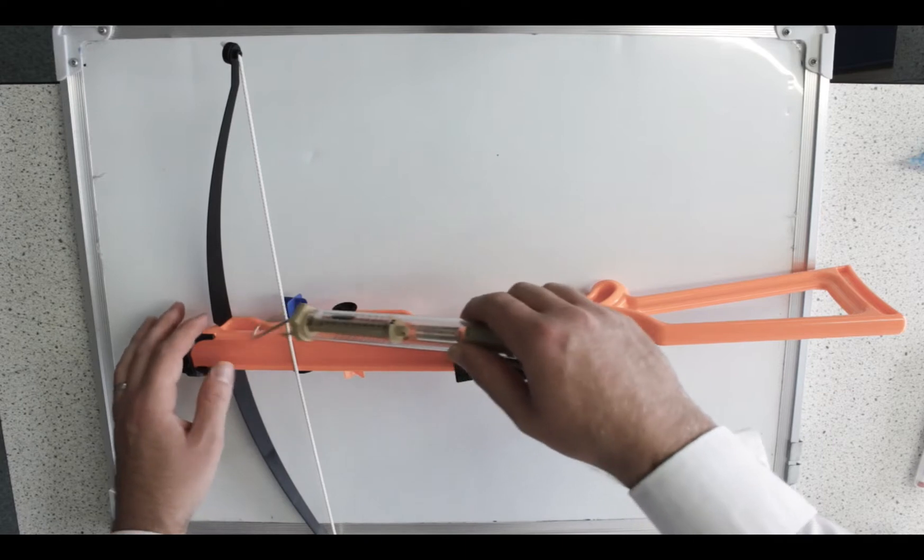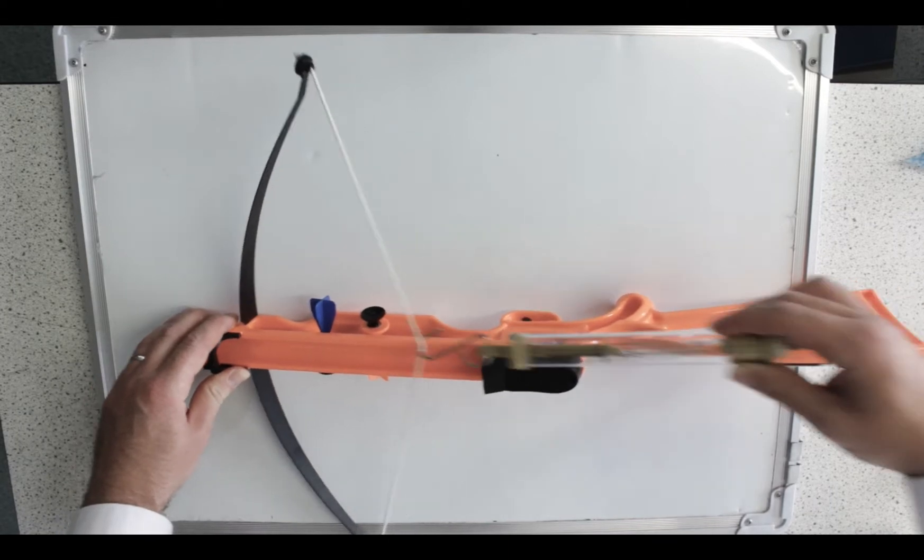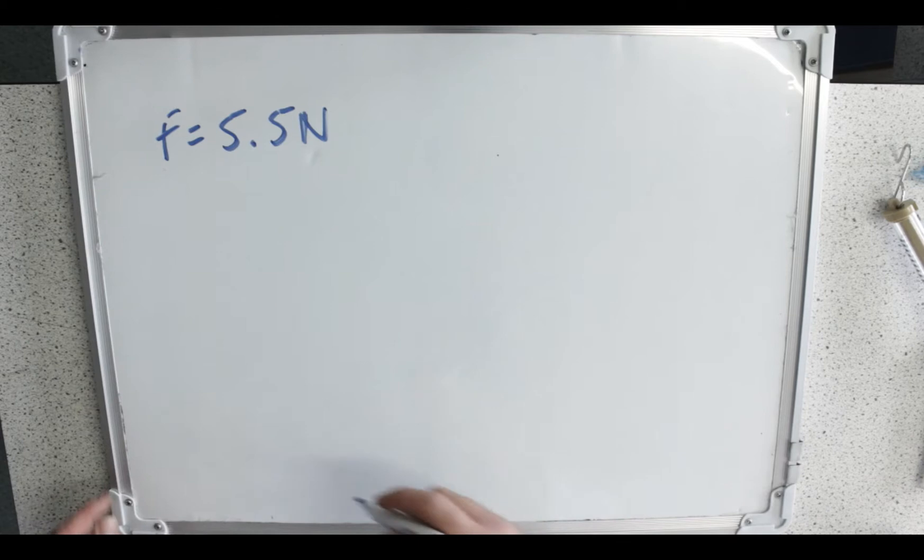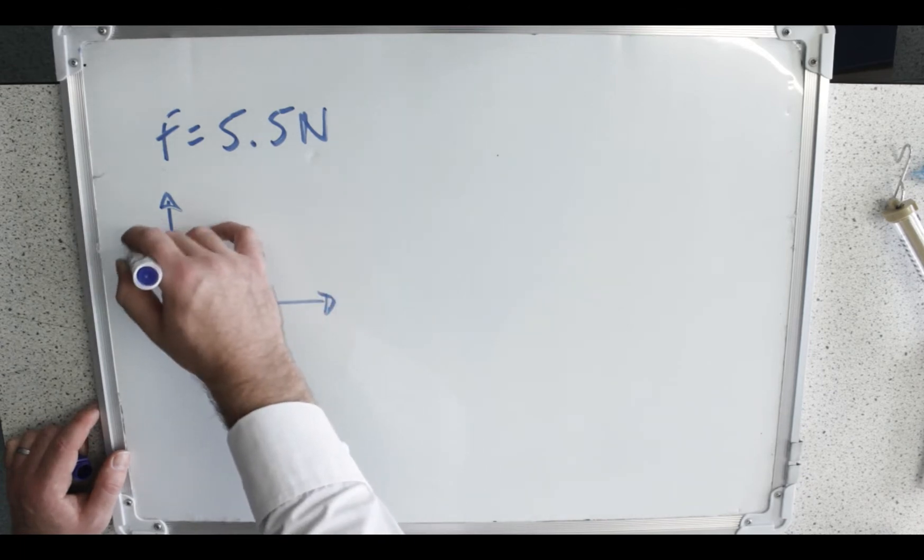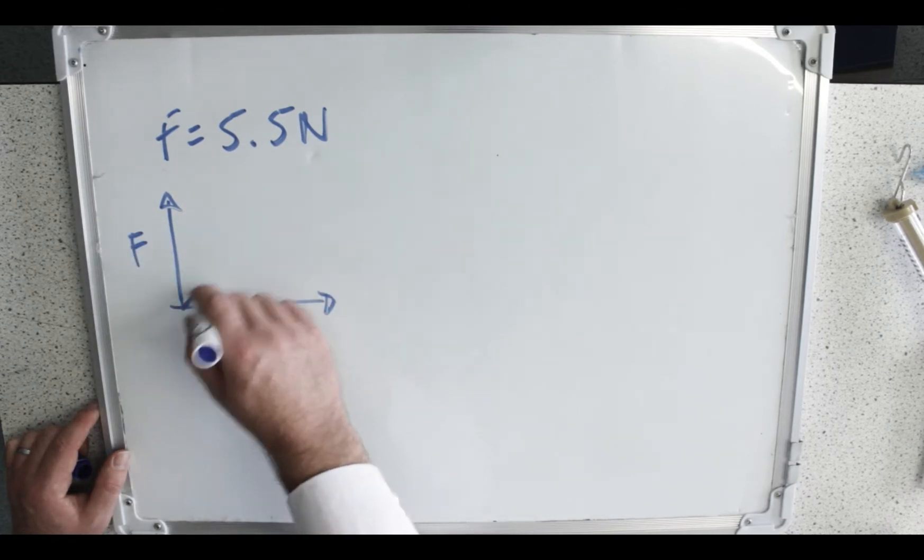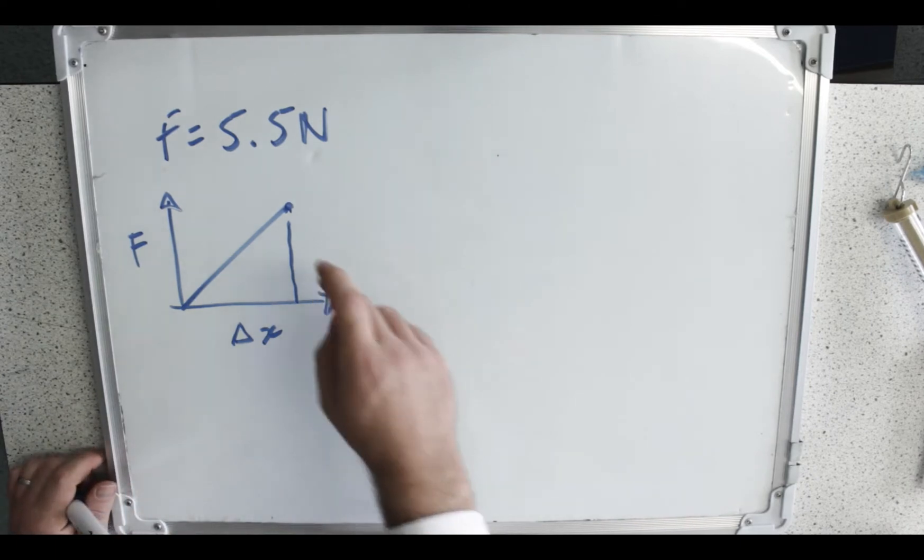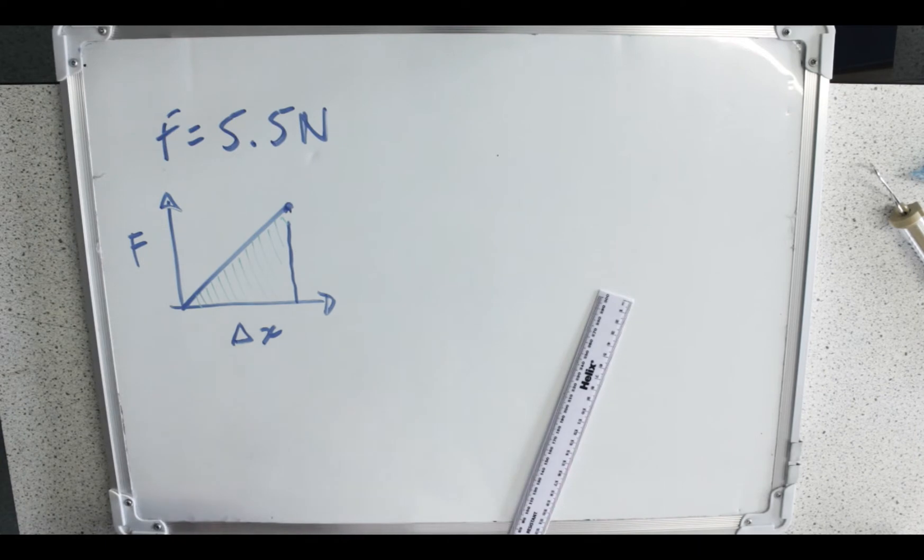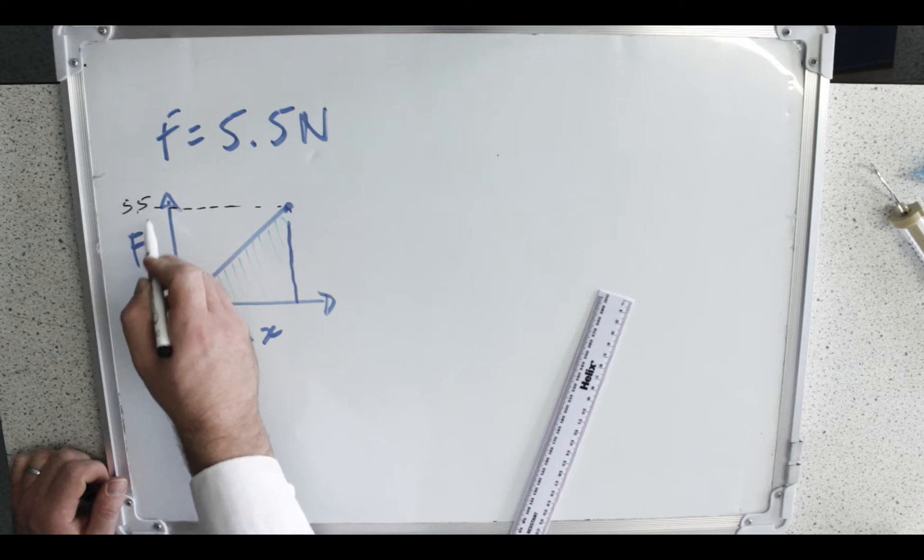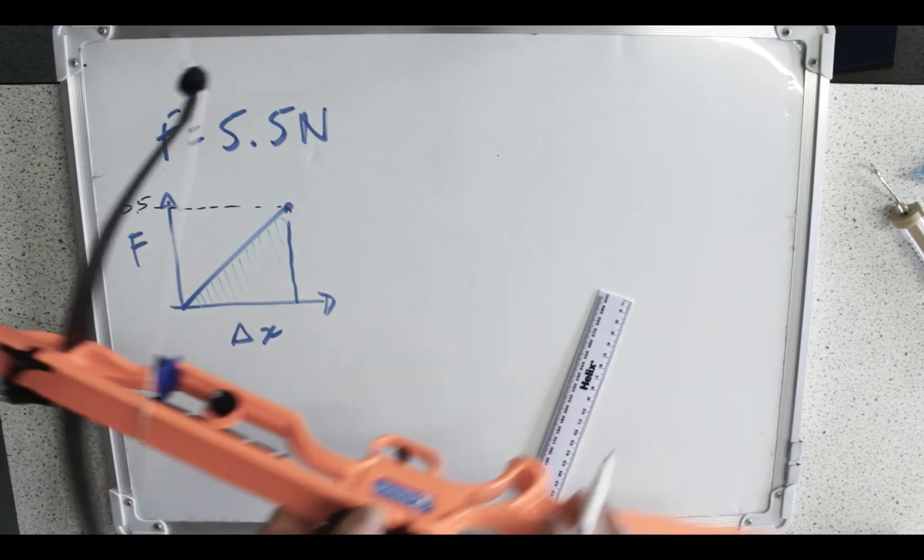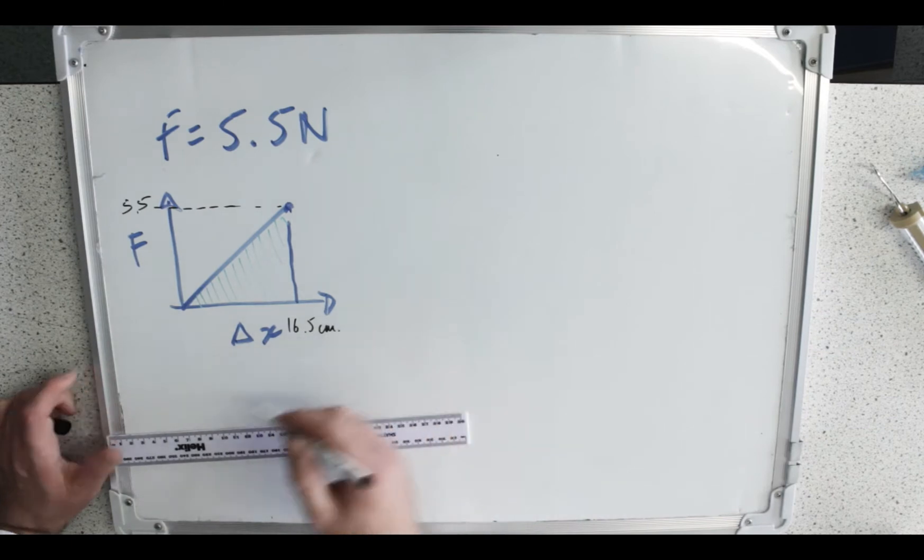I need to measure the force when it is fully extended, which is coming out at 5.5 Newtons. Let's just presume that over that time that string and the crossbow arms, they just obeyed Hooke's law. The area underneath this graph is equivalent to the energy stored in the spring. I know that this point here is 5.5 Newtons and I want to know what this point is. 16.5 centimeters. I'll convert that into meters before I use it though.